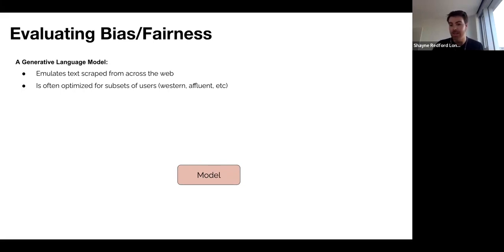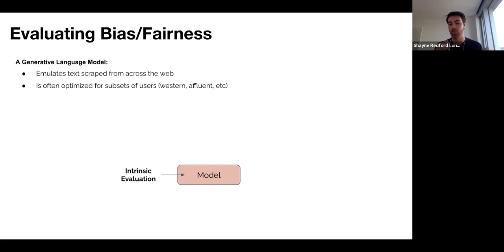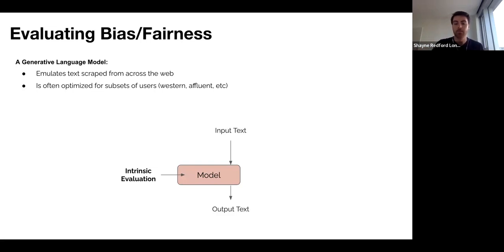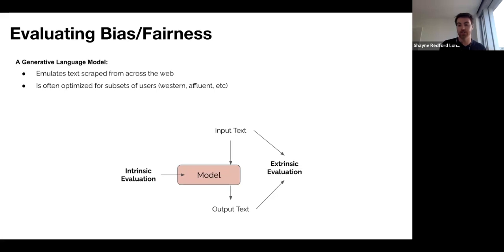I'm going to talk about three stages or categorizations of bias evaluation. The first is intrinsic evaluation, where we look at the model internals to understand how it might embed or represent words of different types in different ways and how that might imply certain biases. A more popular approach lately is to treat the model as a black box — give it input text that might be leading or suggestive, then see what output text the model produces. Done systematically, varying gender, race, or other aspects of the input, you get a systematic extrinsic evaluation from input-output pairs.